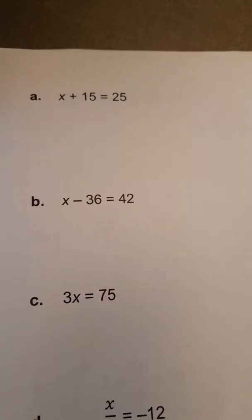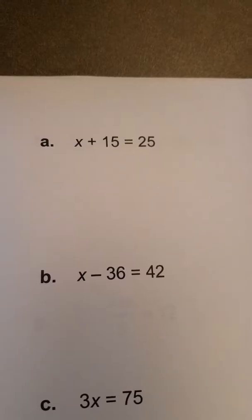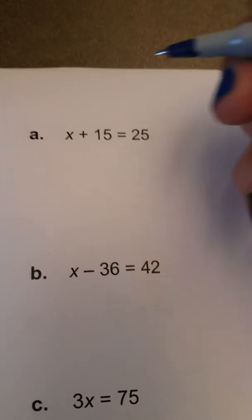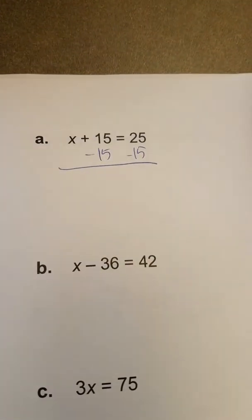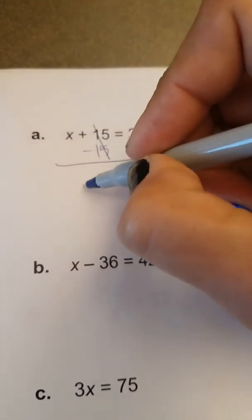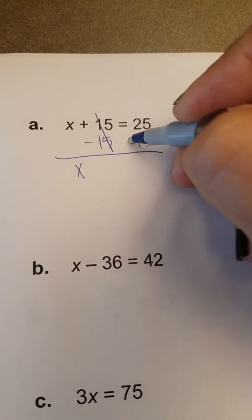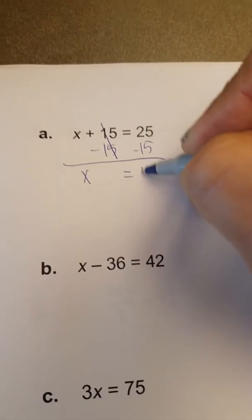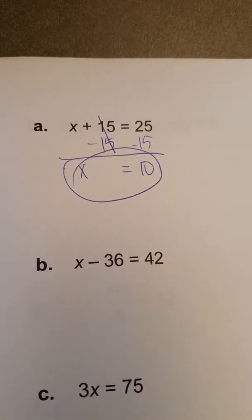So in our first example, x plus 15 equals 25. 15 is being added to our variable x, so to undo addition by 15, we need to subtract 15 from both sides. And when we do that, we carry down our variable x, the 15s cancel out, bring down the equal sign, and we get x is equal to 10. And that's it.